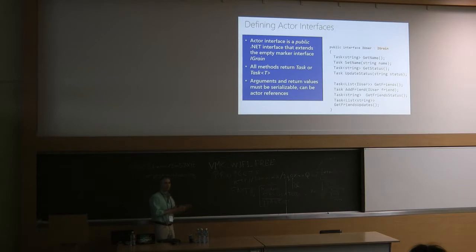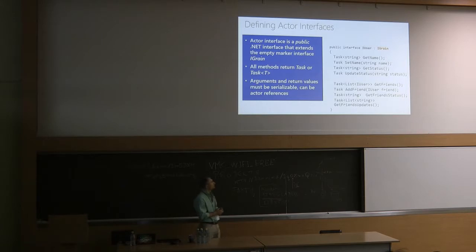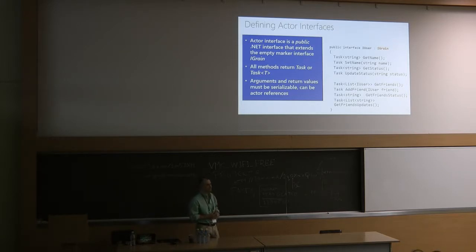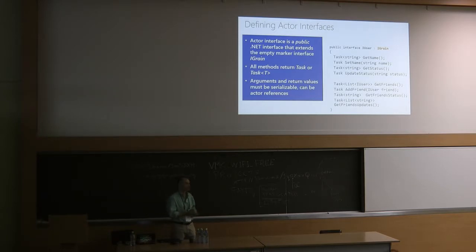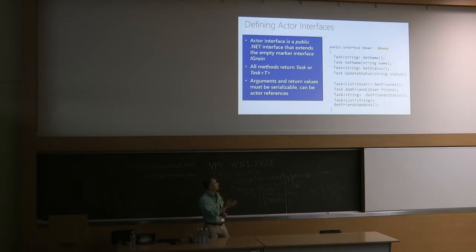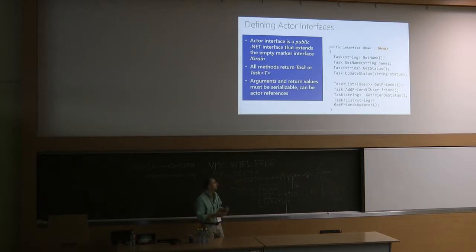With Orleans, you always start with defining an interface for your grain. This is like IDL — interface definition language in COM — very analogous. Or like WSDL for web services. Conceptually it's the same, except you define it just like any local .NET C# or Java interface. You don't need to write any separate language like IDL or WSDL. You mark your interface with IGrain, just a marker interface, indicating that you're defining a grain interface, and then you define asynchronous methods.